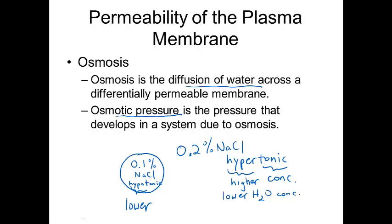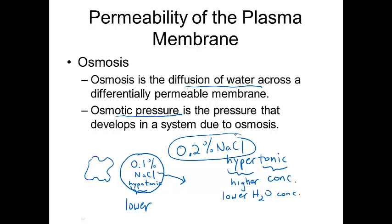Water is going to flow from high to low concentration due to osmosis, so water is going to leave the cell. If it loses too much water, the cell is going to shrivel up. Remember, the reason cells shrivel is because there's more salt outside the cell — this is also why putting salt on slugs kills them, because it draws the water out of their cells.